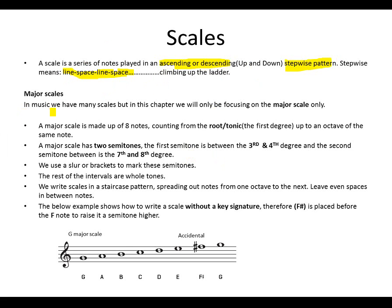Major scales. In music we have many scales but in this chapter we will only be focusing on major scales. A major scale is made out of 8 notes, counting from the root - the root is the tonic, your first degree - up to an octave of the same note. A scale has two semitones between the 3rd and 4th, and the 7th and 8th degree.